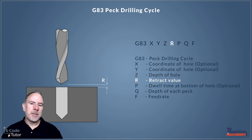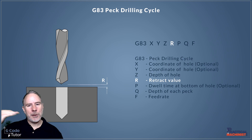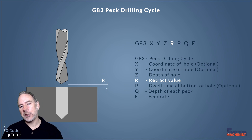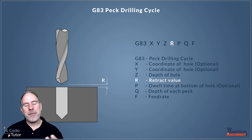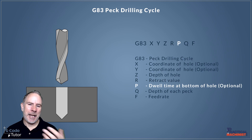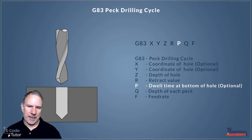R is our retract value. This is where our drill retracts after each peck, and we can set it to retract inside the part or totally clear the part to remove swarf. If we're drilling a blind hole, we might need to pause the Z movement at the bottom just to clean up that face, so we can add a dwell using a P value. This is totally optional and is done in milliseconds — P1000 would be one second.